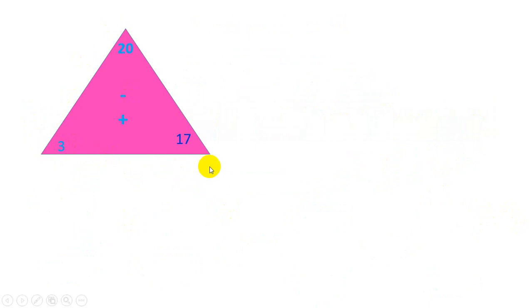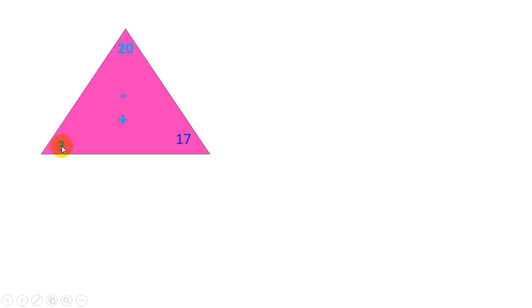This is our triangle. At the top we are going to write the biggest number — here we have 20. At the two bottom corners I am going to write the other two numbers. There is a minus sign here and an addition sign here. The addition sign is written at the bottom because addition is going to happen between these two numbers.